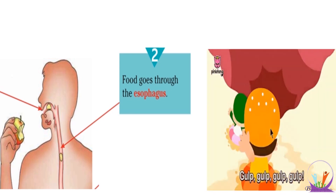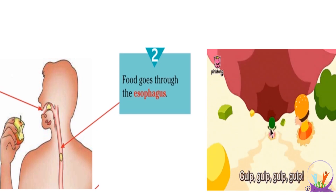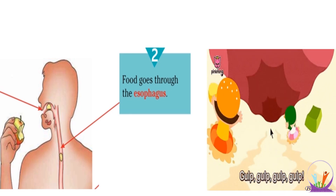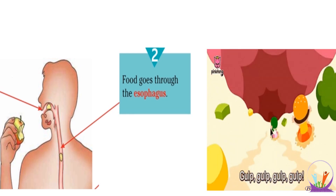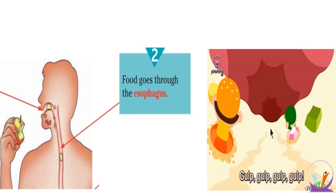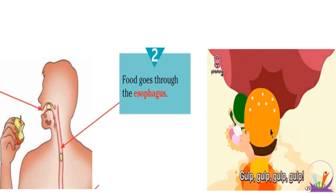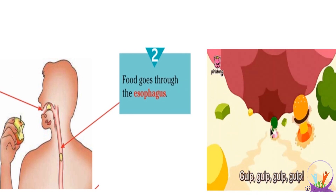After the mouth, the food will go into the esophagus. The esophagus transports the food from the mouth into the stomach.